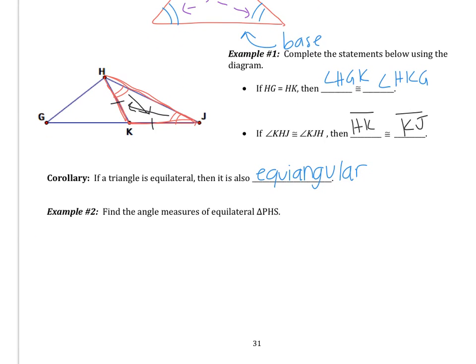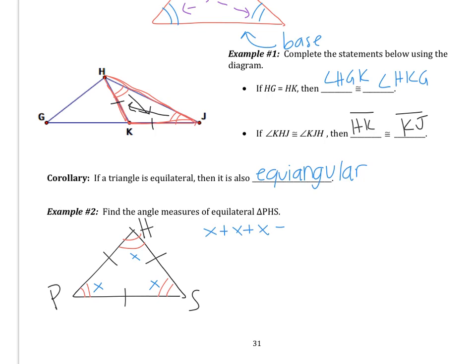Let's look at example two. Find the angle measures of equilateral triangle PHS. I always have to draw a figure, so I'm going to draw triangle PHS. It's equilateral, so all my sides are congruent. By the corollary we just wrote down, all of the angles are congruent as well. I'll mark angle P as X. If all my angles are congruent, H and S are also X. The angles of a triangle sum to 180, so X plus X plus X equals 180. This simplifies to 3X equals 180, giving X equals 60 degrees. Every equilateral triangle is equiangular, so all angles are 60 degrees.